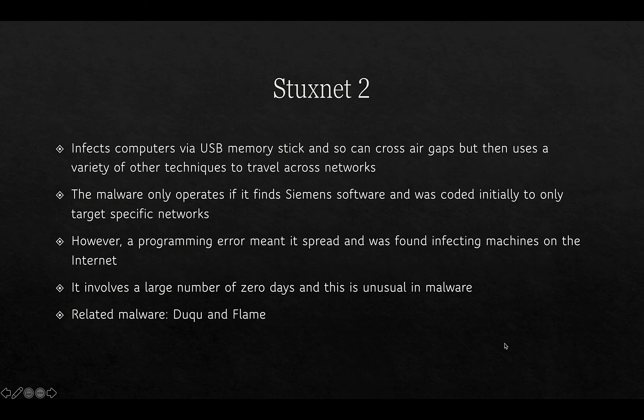Stuxnet infects computers via USB memory sticks and can therefore cross air-gaps, then uses a variety of other techniques to travel across networks. The malware only operates if it finds Siemens software and was coded initially to only target specific networks. However, a programming error caused it to spread, and it was found infecting machines around the world on the internet — that's how it came to light. It involves a large number of zero-days, which is unusual in malware. Related malware to Stuxnet includes Duqu and Flame, which have similar effects.